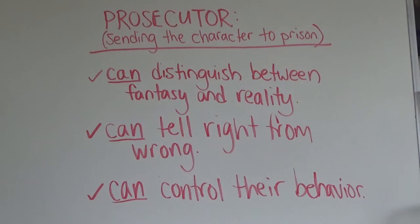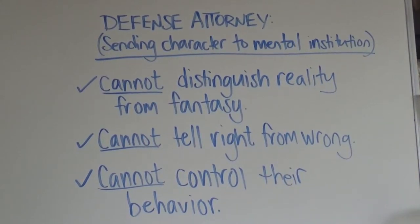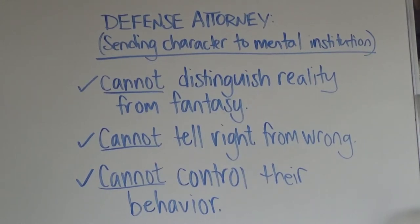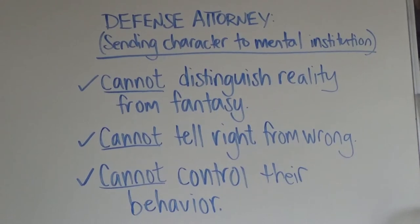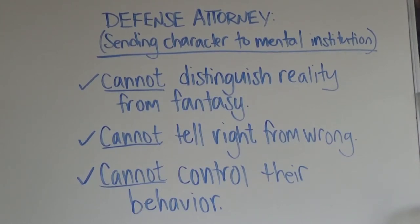If you find enough clues and evidence from the story to prove each of these three things to your jury, then you are showing them that the character was completely sane during the moment of their crime and they need to go to prison. On the other hand, if you decide you want to be a defense attorney trying to defend and protect a character, this means you're trying to convince a jury they are legally insane and need to be sent to a mental institution. To build a convincing case you need to show three things: number one, the character cannot distinguish reality from fantasy; number two, they cannot tell right from wrong; and number three, they cannot control their behavior — they really don't know what they're doing. If you can convince a jury of these three things, your client can go get the help they desperately need.